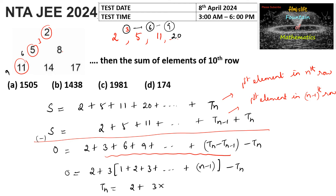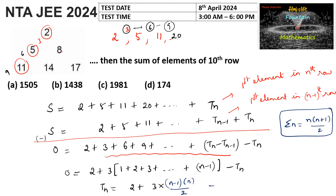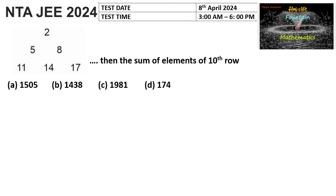So Tn equals 2 plus 3 times the sum of the first (n−1) natural numbers. We know the sum of the first n natural numbers is n(n+1)/2, so the sum of the first (n−1) natural numbers is (n−1)·n/2. Simplifying, the first element in the nth row is Tn = 2 + 3·n(n−1)/2, which we can also write as 4 + 3n(n−1)/2.